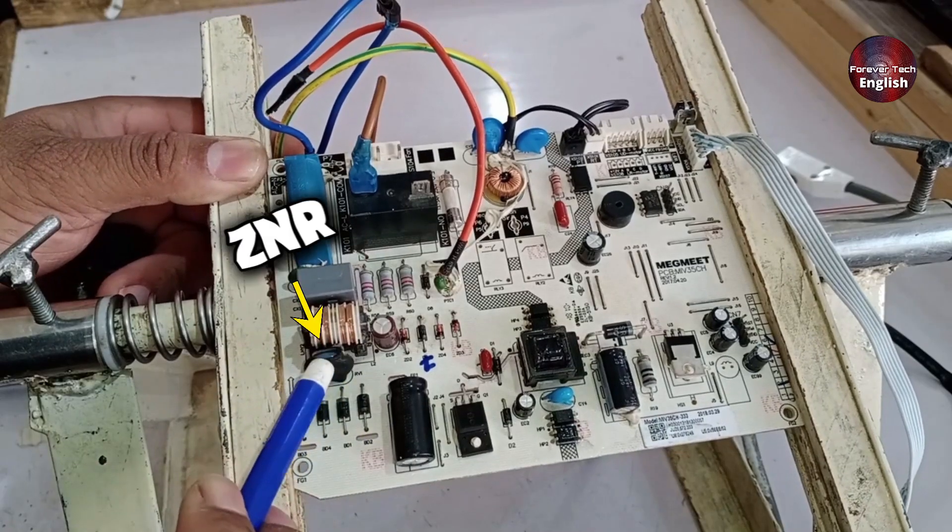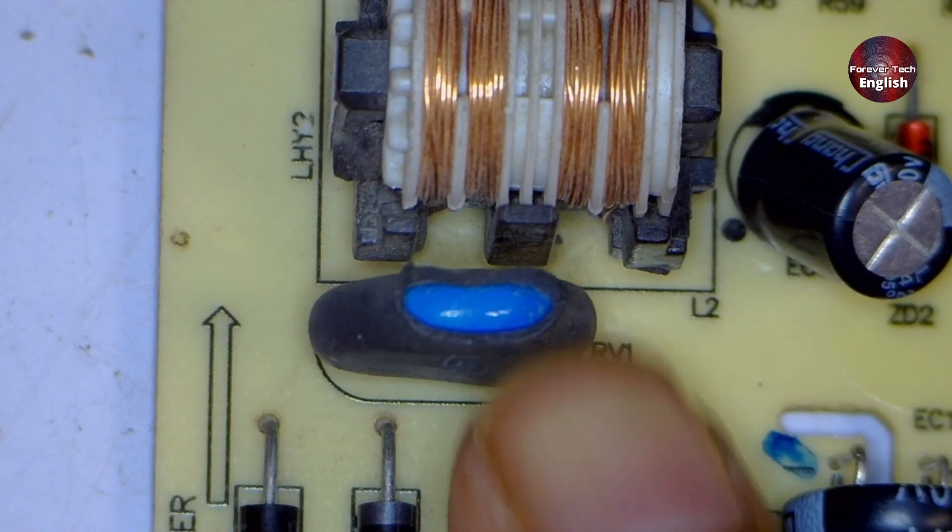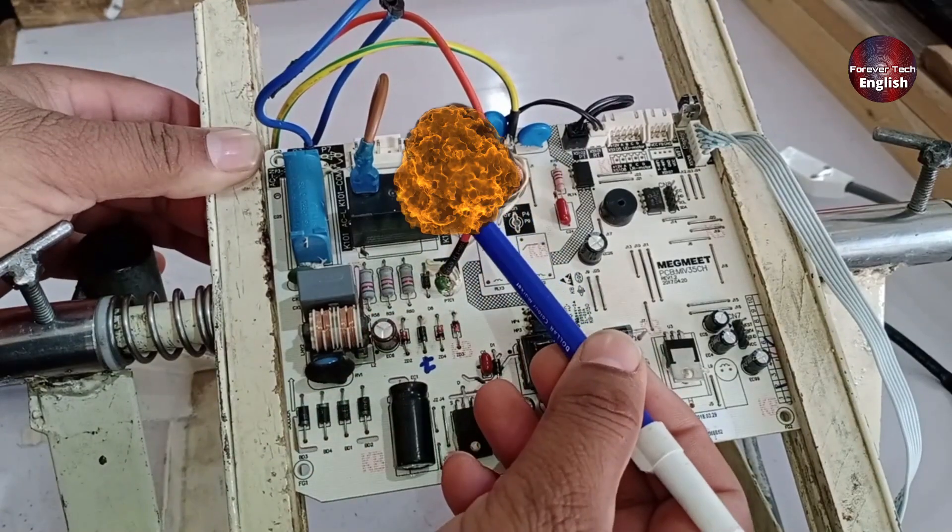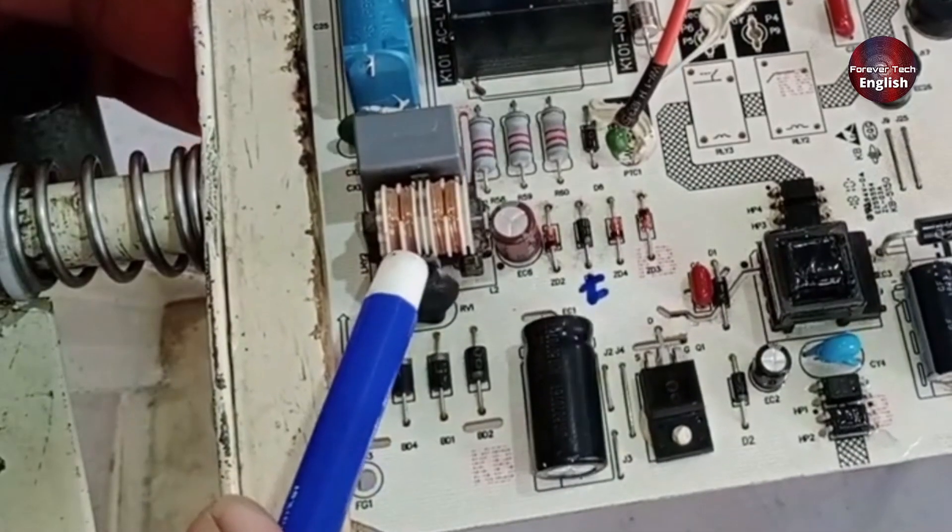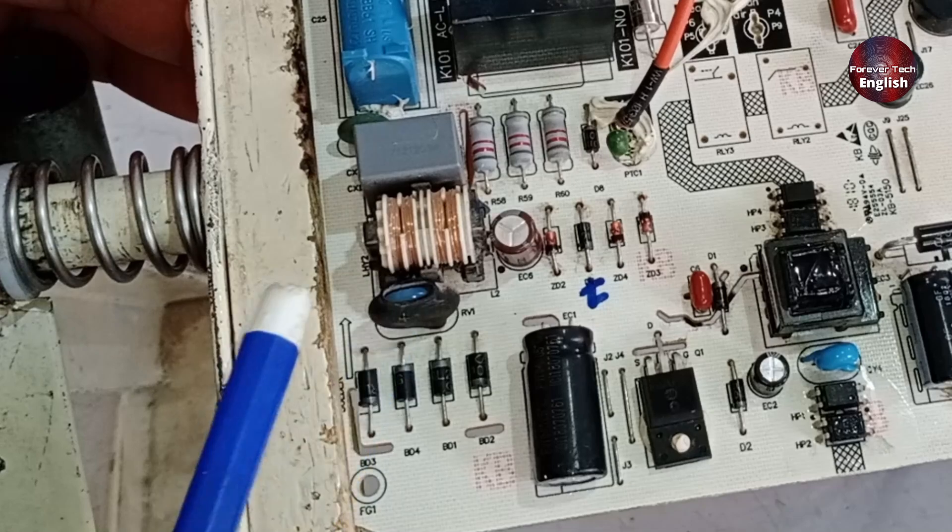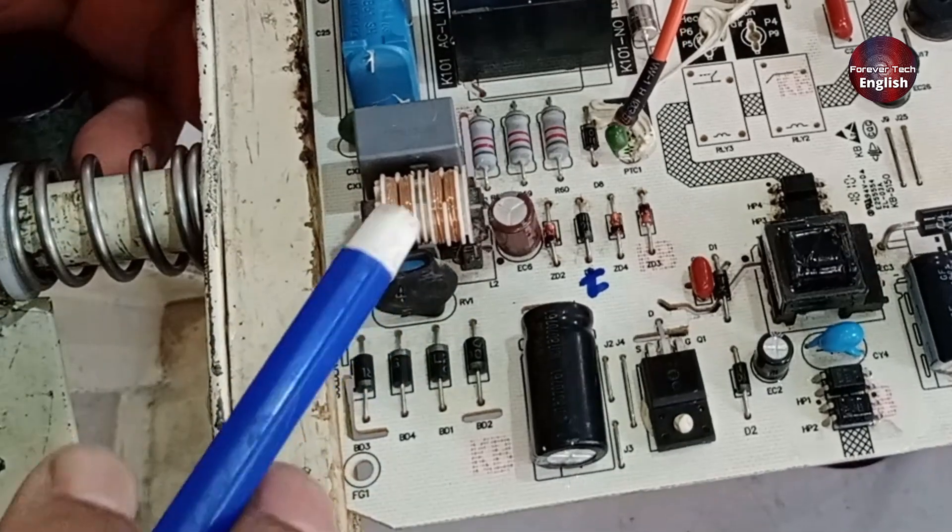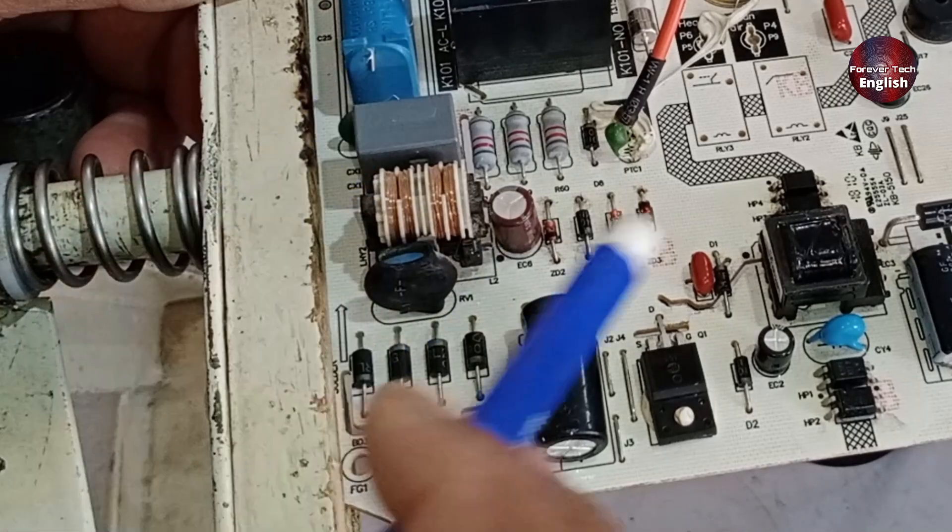After this, there is a ZNR. The purpose of the ZNR is that whenever high voltage occurs, the ZNR will short, and this will cause the fuse to blow, saving the rest of the PCB. If you set your multimeter to continuity or ohms mode and it shows a short or some resistance, then it means the ZNR is faulty and you need to replace it. This will increase the chances that your unit will start working again.